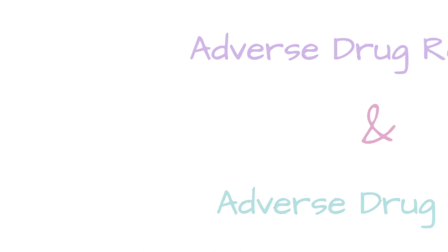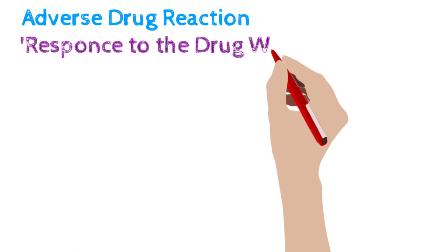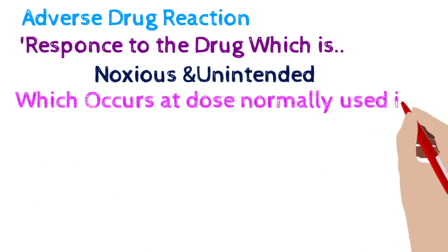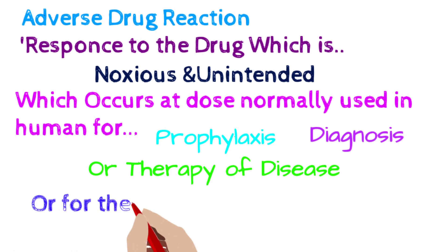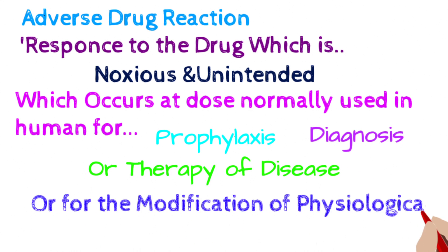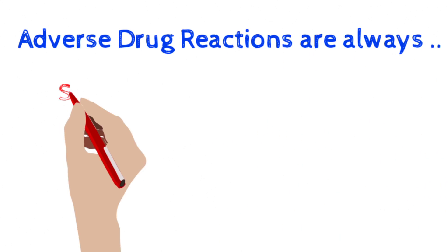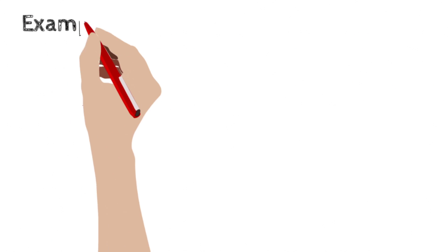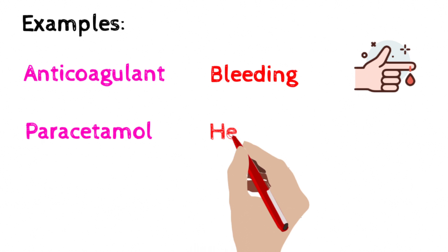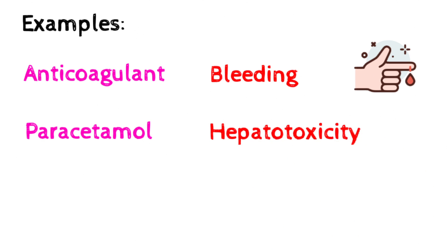Let's see adverse drug reaction first. Adverse drug reaction is a response to a drug which is noxious and unintended, and which occurs at a dose normally used in humans for prophylaxis, diagnosis or therapy of disease, or for the modification of physiological function. In simple language, adverse drug reactions are always suspected to be due to the drug. Examples are: anticoagulants causing bleeding, and paracetamol causing hepatotoxicity. In both examples, you can suspect the drug can cause the adverse reactions.